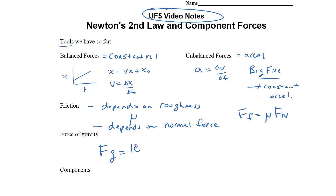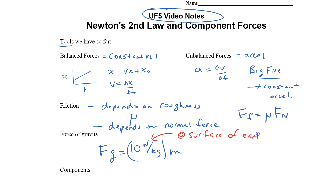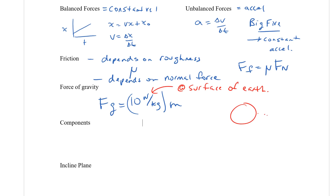The force of gravity equals 10 newtons per kilogram multiplied by the mass. This is true at the surface of the Earth. If we move farther from the surface, that number gets lower and lower, and at other planets it would change.